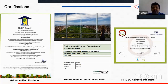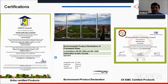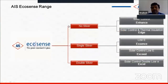On the certification front, AIS has obtained IGBC certification, GRIHA certification, and Environmental Product Declaration (EPD) — relatively new to India. They have also applied for Health Product Declaration (HPD) and expect to receive it within a month or two, demonstrating their commitment to sustainability benchmarks.